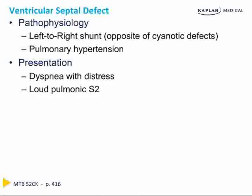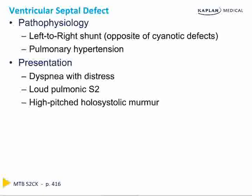When patients present in distress, they become short of breath because their body's oxygen demand can't be met. This right ventricular overload leads to right ventricular hypertrophy and causes a loud pulmonic S2 — the P2 component gets louder because the increased pulmonary artery pressure slams the pulmonary valve shut. They also present with a high-pitched holosystolic murmur, as compared with the lower-pitched murmurs of mitral and tricuspid regurgitation.